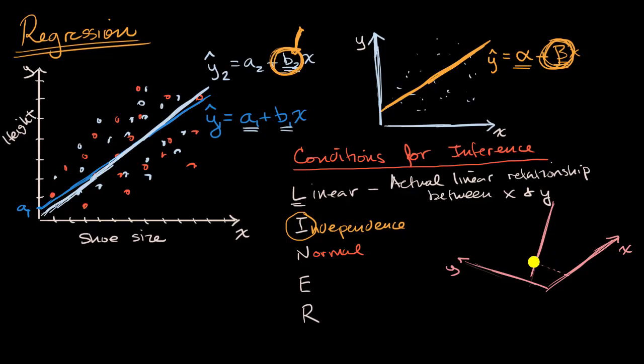And so the normal condition tells us that for any given x in the true population, the distribution of y's that you would expect is normal, so let me see if I can draw a normal distribution for the y's given that x. So that would be that normal distribution there, and then let's say for this x right over here, you would expect a normal distribution as well.